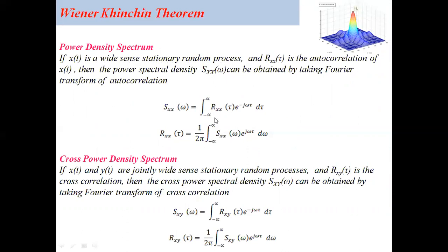These two equations are called the Wiener-Kinchin relations, or Wiener-Kinchin theorem. If we look into the cross power density spectrum, here we consider two different signals X(t) and Y(t), which are jointly wide sense stationary. Rxy(τ) is the cross correlation function, because we are taking two different signals. The power spectral density is then called the cross power spectral density, denoted Sxy(ω), which can be obtained by taking the Fourier transform of the cross correlation. The expressions are written here for your convenience.